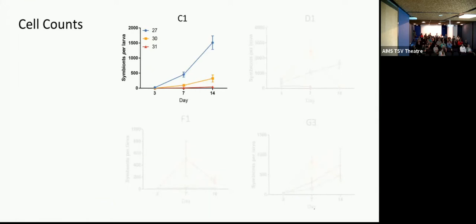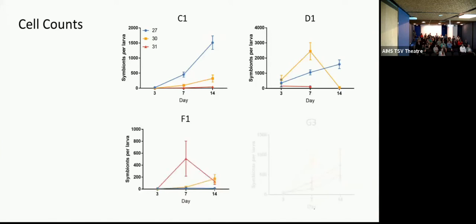And so Acropora tenuis is commonly found with clade C. So this is very much what we expected. At 27, we see the highest rate of infection. The pattern is similar for ambient and D. At 31, we had mortality post-day 7, so we had no day 14 infections. And then at 30, we saw a high uptake of the symbionts, however that crashed out by the time two weeks came around.